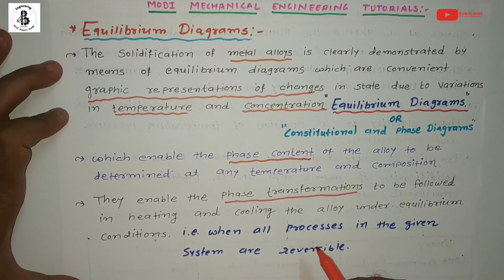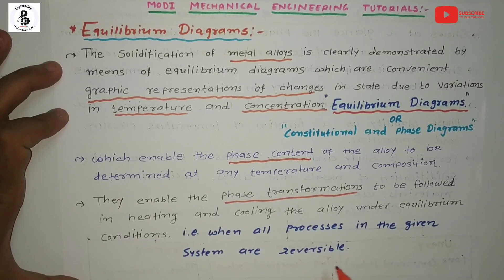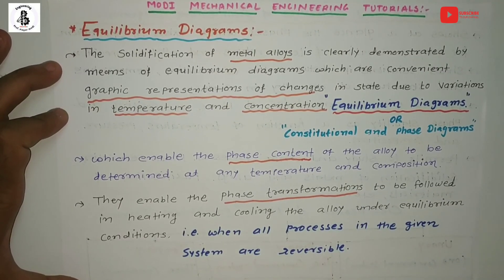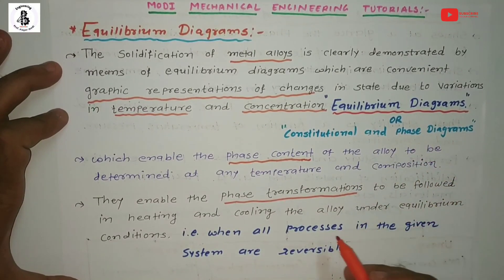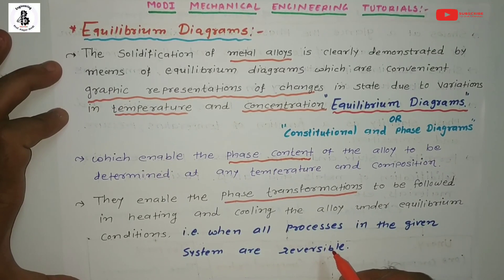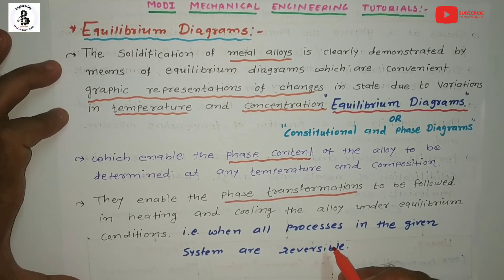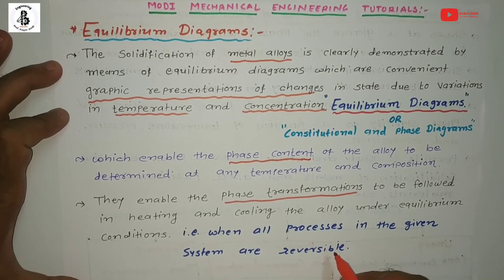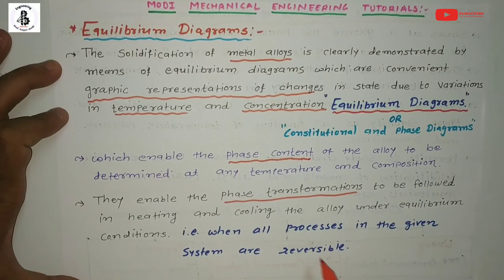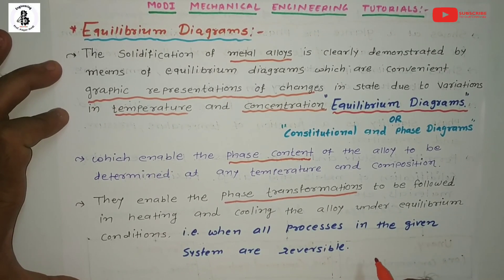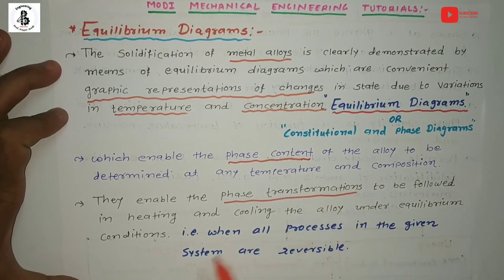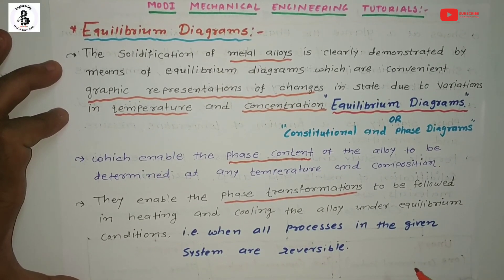All these processes are reversible. If you heat the material it forms a different phase, and if you cool the material from higher temperature to lower temperature it again undergoes different phase transformations. All processes are reversible in the equilibrium diagram, both during heating and during cooling of the alloy.